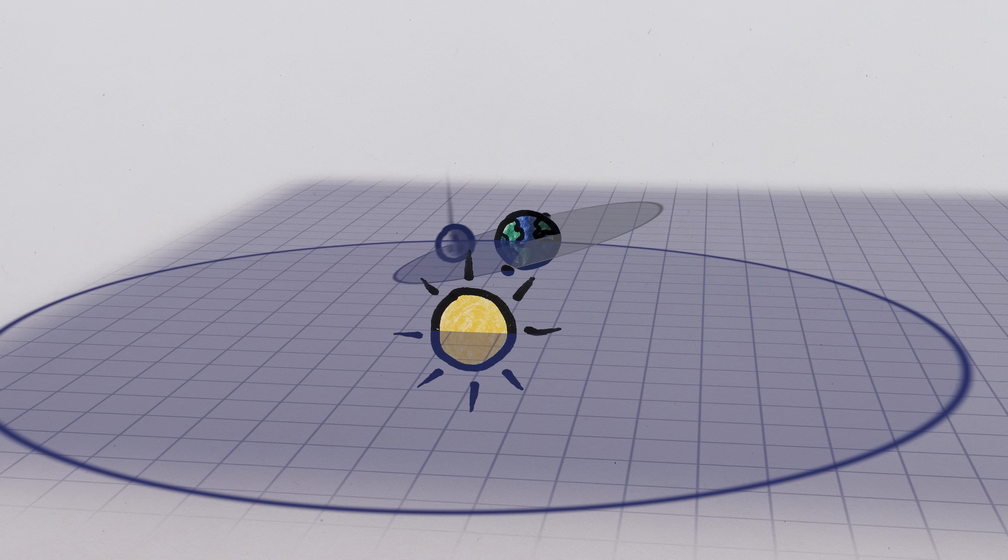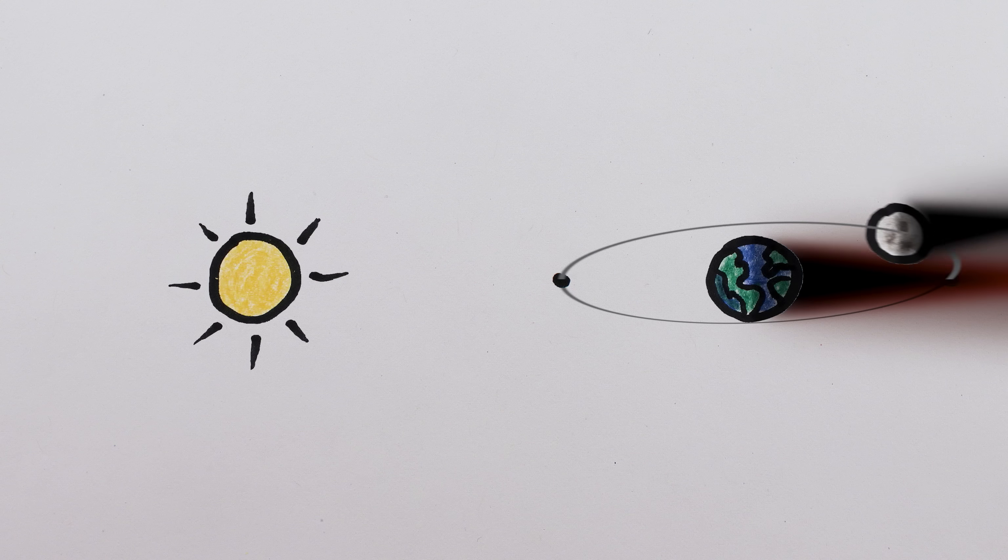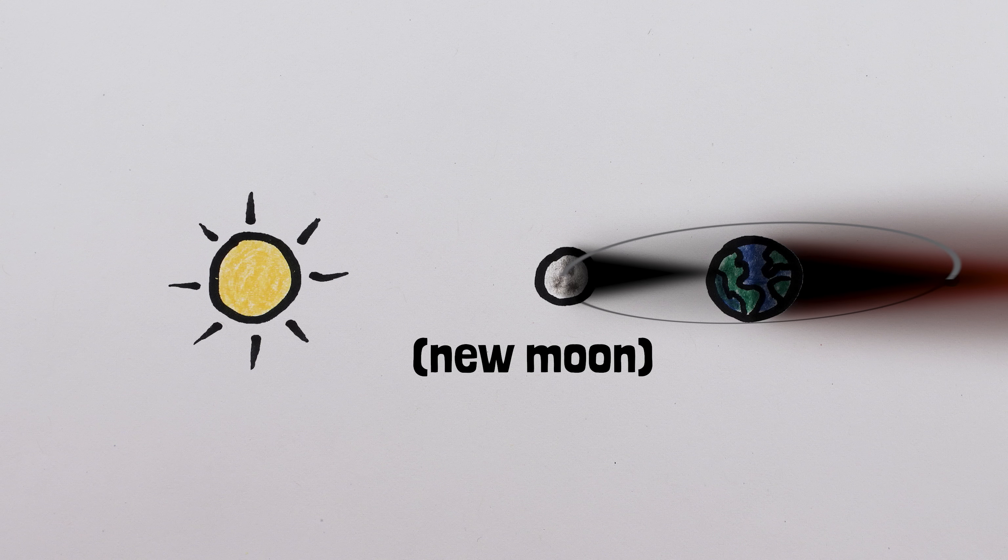When these points are in a line with the Sun at new or full Moon, the Sun, Moon, and Earth are all in a line, and if the Moon be then new, her shadow falls upon the Earth.